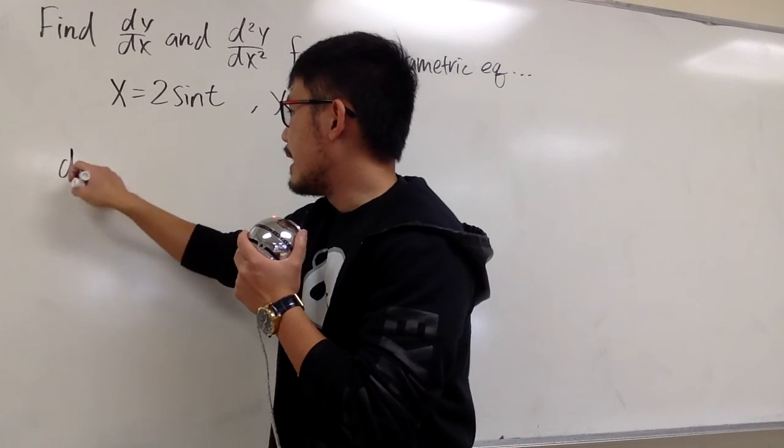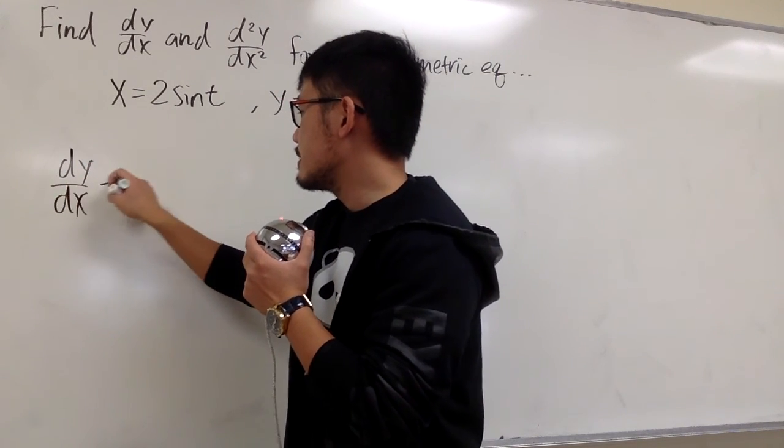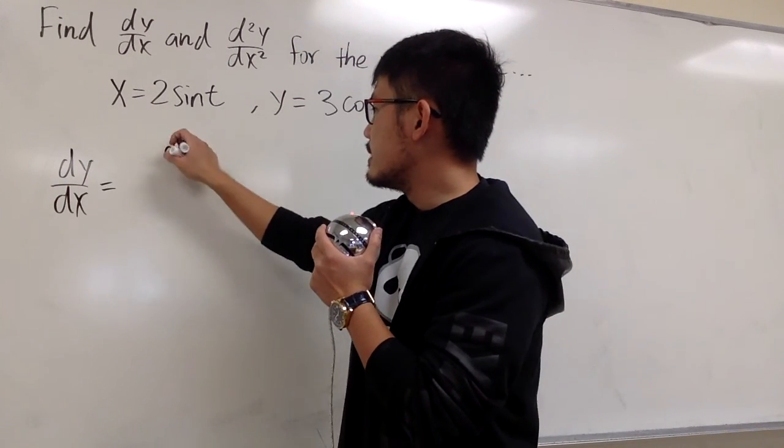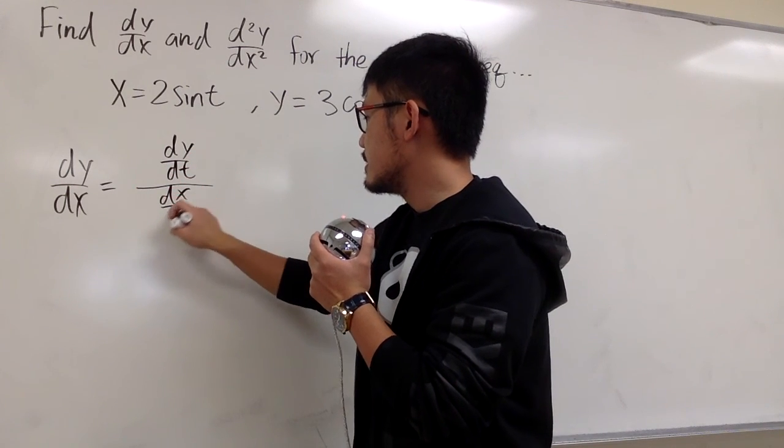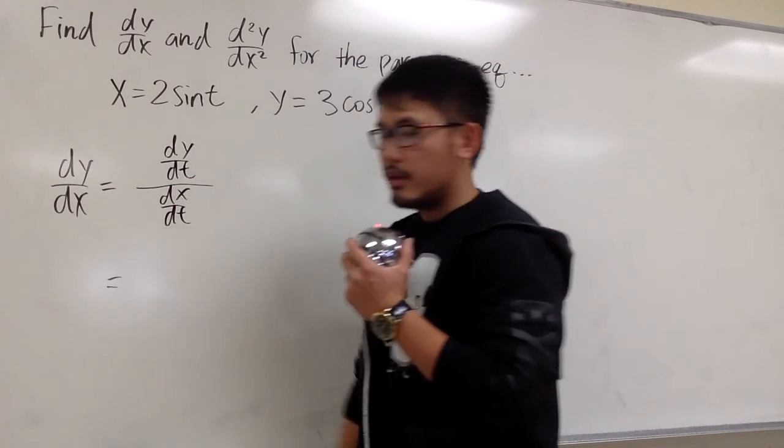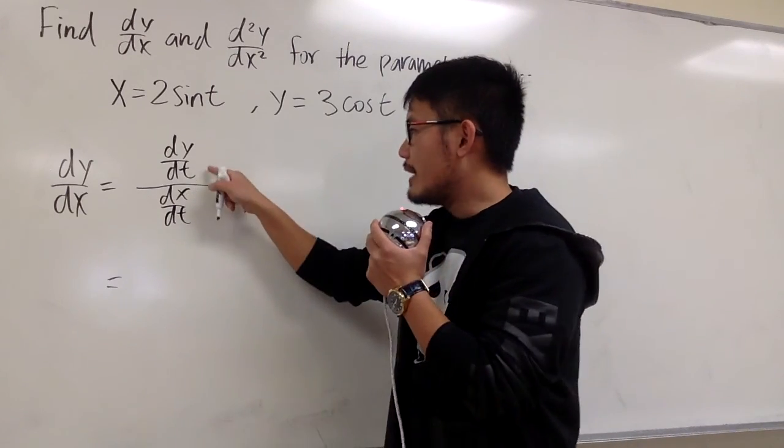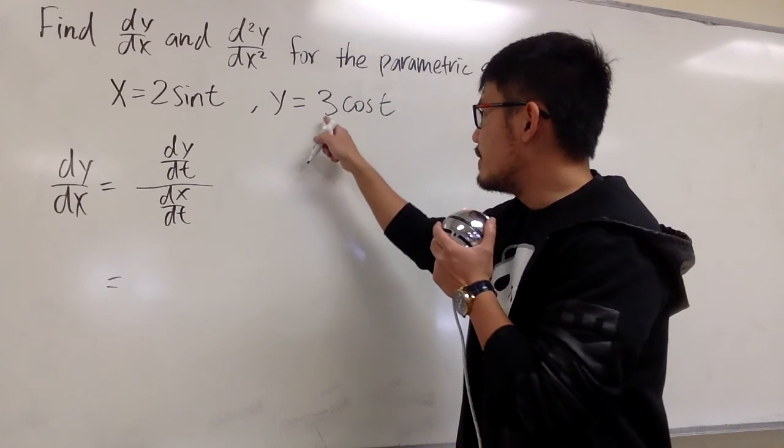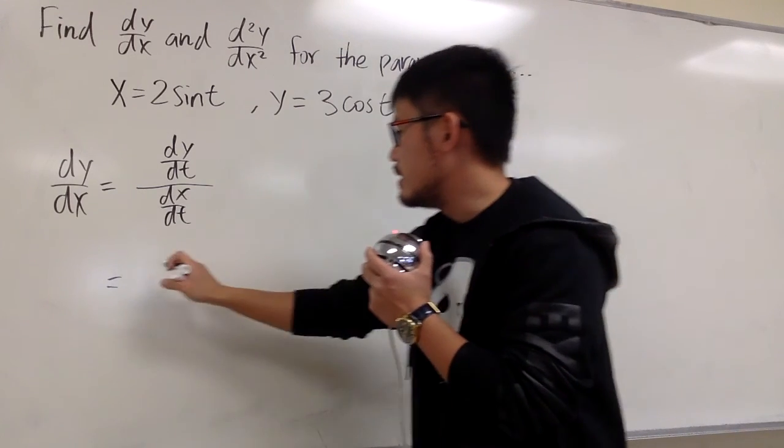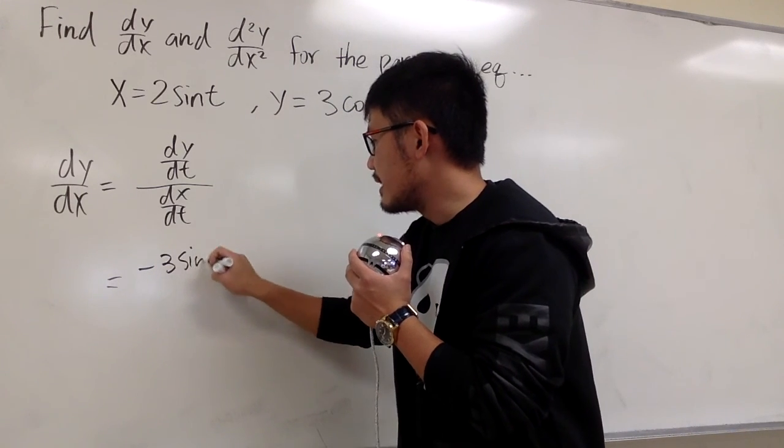So let's begin by doing dy/dx first, which we know is dy/dt over dx/dt. And for the top, dy/dt, we look at the y equation and do the derivative. Derivative of 3 cos t is negative 3 sin t.